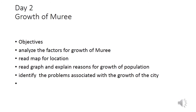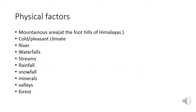This is day two and we will study the growth of Murree. The objectives are to analyze the factors for growth of Murree, read the map for location, read the graph to explain the trends of population growth, and identify problems associated with the growth of the city. Physical factors include mountainous areas at the foothills of the Himalayas, cold and pleasant climate, waterfalls and streams, natural vegetation of conifer forest, rainfall from both western depression in winters and monsoon in summer, snowfall in winters, and minerals.